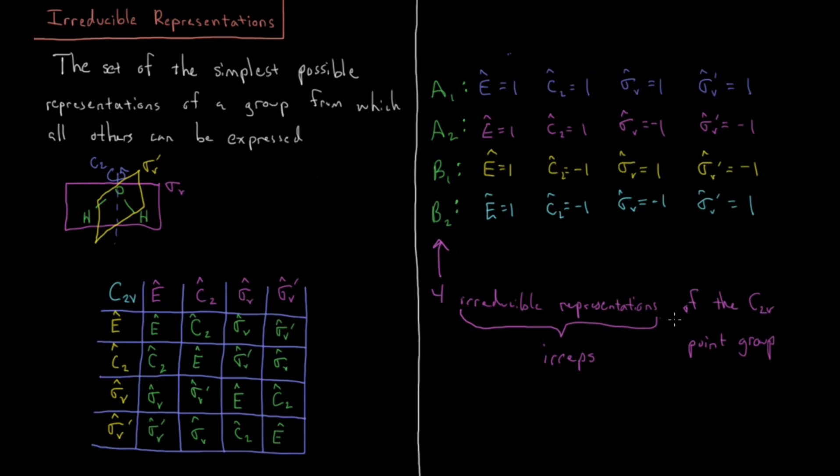These irreducible representations are going to be very important for us because the collection of them is going to form what we call a character table. And a character table is basically a condensation of the most useful information about a point group that we can use in order to determine some very useful properties about the molecule that we have once we know its point group.